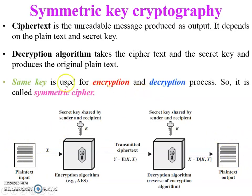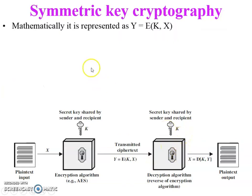The fifth element is the decryption algorithm. It takes the ciphertext and the secret key as input and produces the original plain text. On the right-hand side of the figure, the decryption algorithm receives the transmitted ciphertext and the same key used by the sender, and its output is the original plain text — the same message sent by the sender.